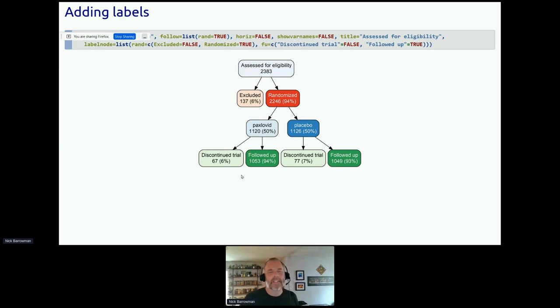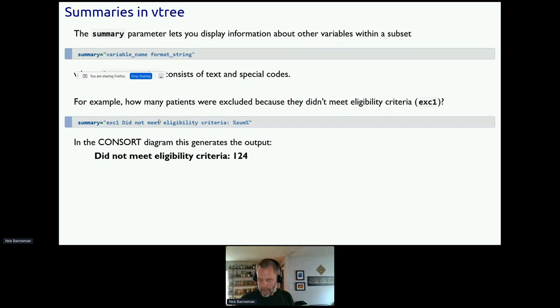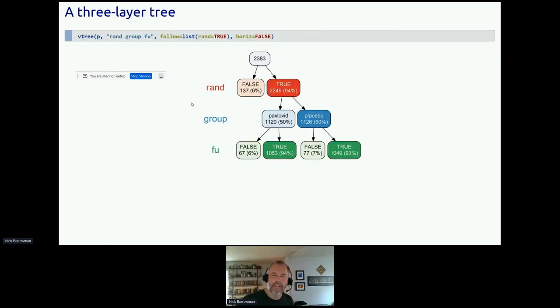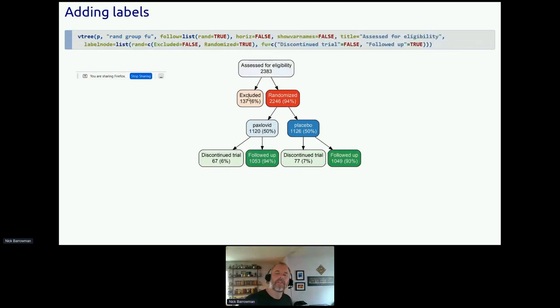Oh, I'm sorry, I've skipped a step here. I just want to point out that what I've done here, I've used a parameter called label node that lets me replace trues and falses with more informative names like excluded or randomized. And if you look up here, it says show var names equals false compared to the previous page. In the previous slide, I had the variable names appearing, and that's helpful when you're building the tree. But once you've labeled the nodes, excluded equals false, randomized equals true, and discontinued trial equals false, followed up equals true, then you don't need the variable names anymore.